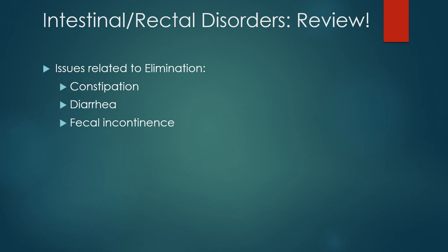Chapter 41 of your book covers constipation, diarrhea, and fecal incontinence, which are straightforward enough for you to review on your own. Bring forward from Adult Health 1 things like recognizing the importance of establishing a bowel routine, proper dietary habits like increasing fiber, fruits, vegetables, and hydration, increasing abdominal muscle strength, using normal positioning for defecating, and overall knowing how to manage and prevent these issues of elimination, and who's at the most risk of developing these disorders.